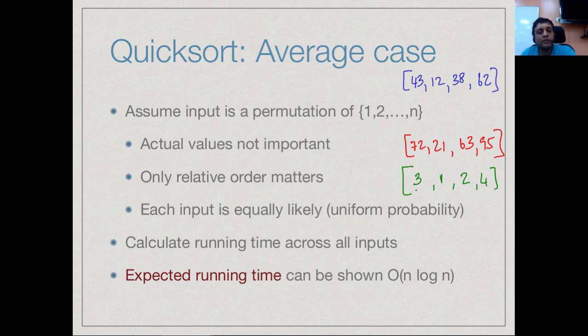It has 4 elements and the 4 elements are ordered in this way. The actual values are not important, only the relative order matters. So we can actually think of inputs of size n to be these kinds of reorderings of 1 to n, or permutations of 1 to n.